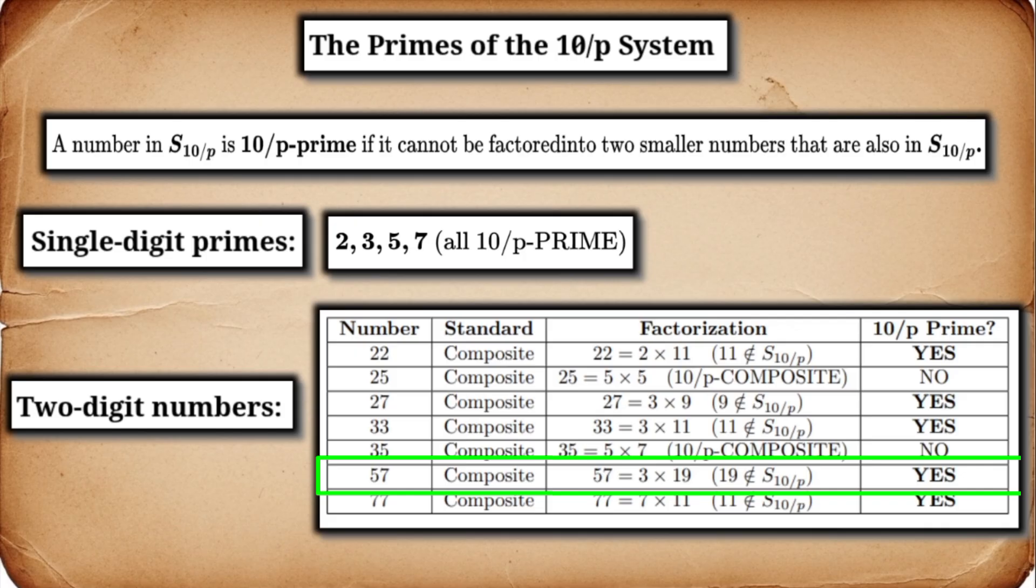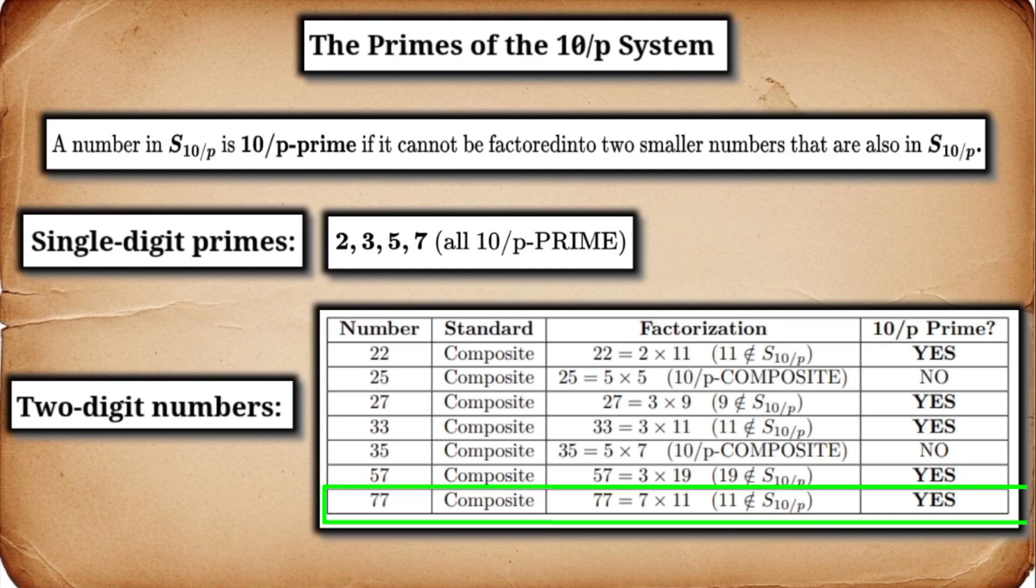57. This is a famous one in standard math. It's composite: 3 times 19. But 19 is not in S10 over P. Is there any other pair? No. Therefore, 57 is a 10 over P prime. 77. Standard, 7 times 11. 11 is not in S10 over P. Therefore, 77 is a 10 over P prime.